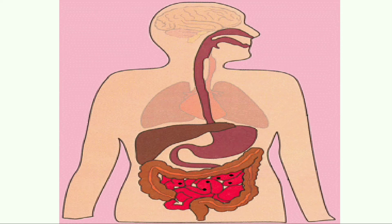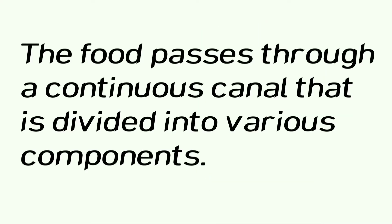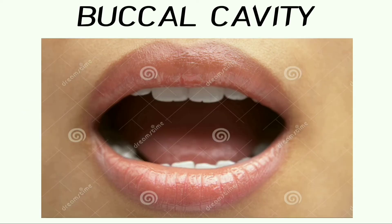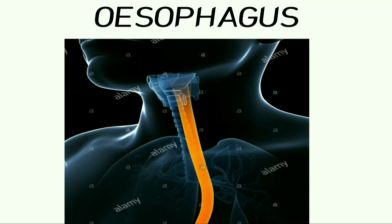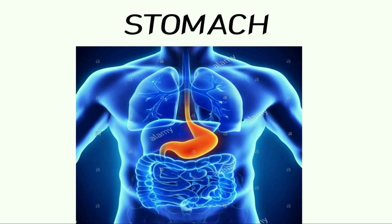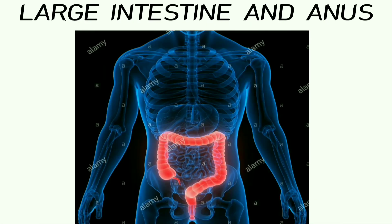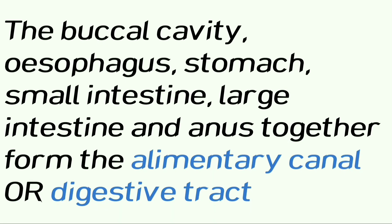The food is slowly digested. Digestion in humans: we take in food through the mouth, digest it, and then utilize it. The food passes through a continuous canal divided into various components — starting with the buccal cavity, esophagus, stomach, small intestine, large intestine, and anus. Together, these form the alimentary canal or digestive tract.